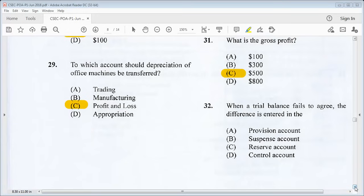Question 32 says, when a trial balance fails to agree, the difference is entered in the A, provision account, B, suspense account, C, reserve account, D, control account. We know it is B, suspense account.